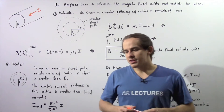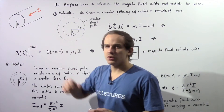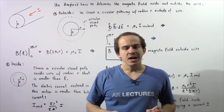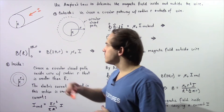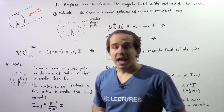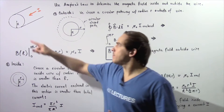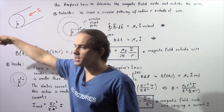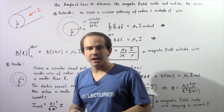Suppose we have a conducting wire which is assumed to be a cylinder. The radius of this wire is given by uppercase R, and the wire carries an electric current I which is coming out of the board as shown by the following arrow.